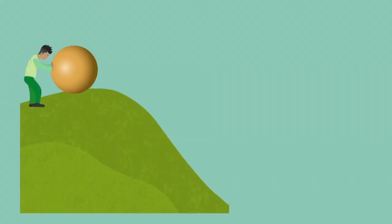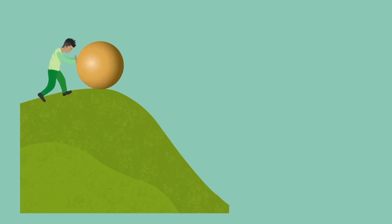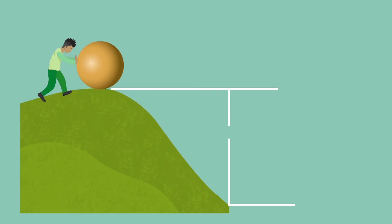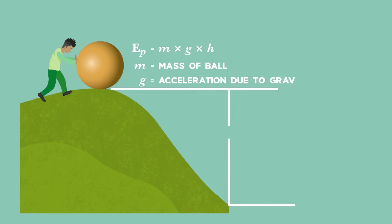Our study of energy, work, and power deals only with gravitational potential energy. Gravitational potential energy is the energy an object possesses due to its position above a reference point. We calculate it using: EP = mgh, where m is the mass in kilograms, g is the acceleration due to gravity in meters per second squared, and h is the change in height above or below the reference point.